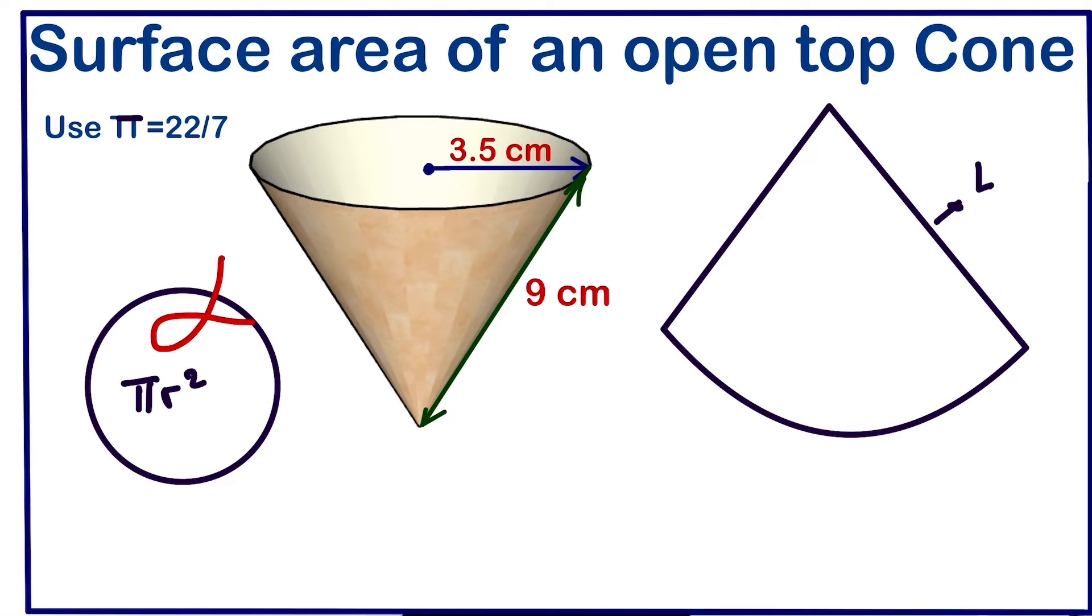Height, which is L. So this is it here. The area of the lateral area is going to be πrL. So this is the formula that we are going to use to calculate the lateral area. Initially, our surface area will just be left with πrL. So the surface area of an open top cone is the same as πrL.